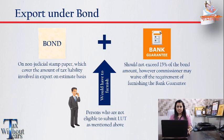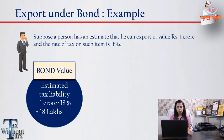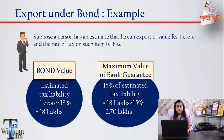Let us understand this with an example. Suppose an exporter wants to export goods worth Rs. 1 crore having an 18% tax rate applicable. Then the bond amount shall be 18% of 1 crore, that is Rs. 18 lakh, and the bank guarantee amount shall be a maximum of 15% of the bond value, that is 15% of Rs. 18 lakh = Rs. 2.7 lakh.